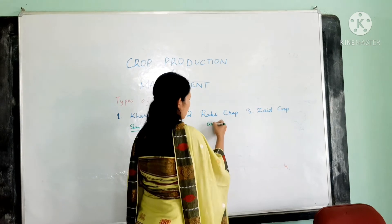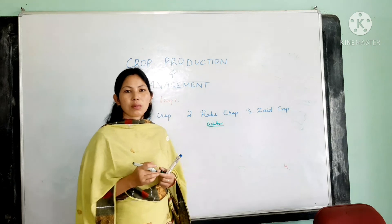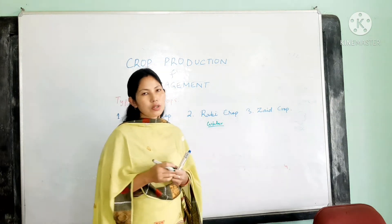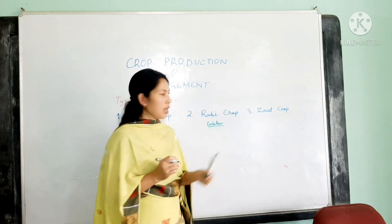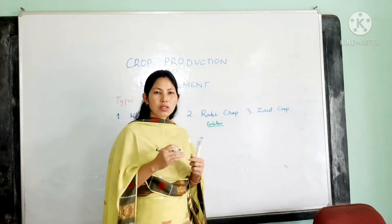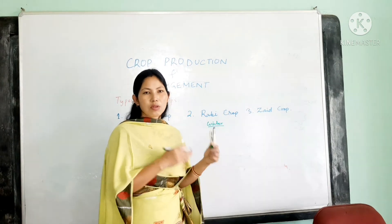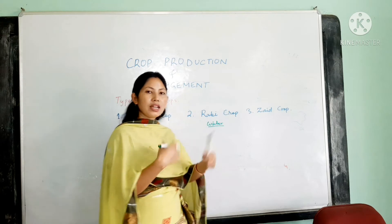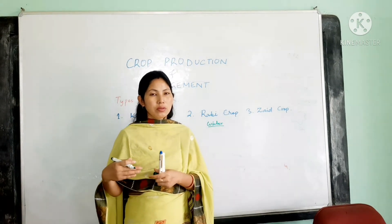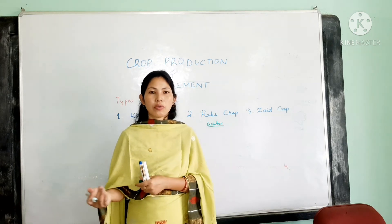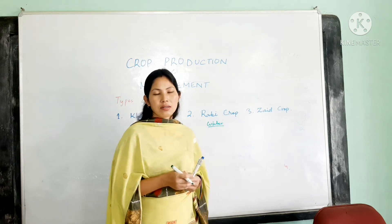Next we have the Rabi crop, also known as the winter crop. They are grown during the winter season — in the months of November, December, or January — when there is less rainfall and less water, as Rabi crops require less water. They don't require as much water as during the rainy season. With the onset of winter, Rabi crops are grown — like mustard and lentils.